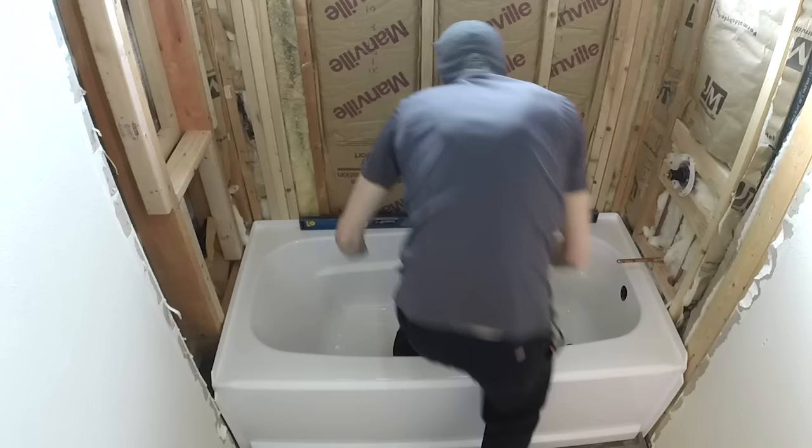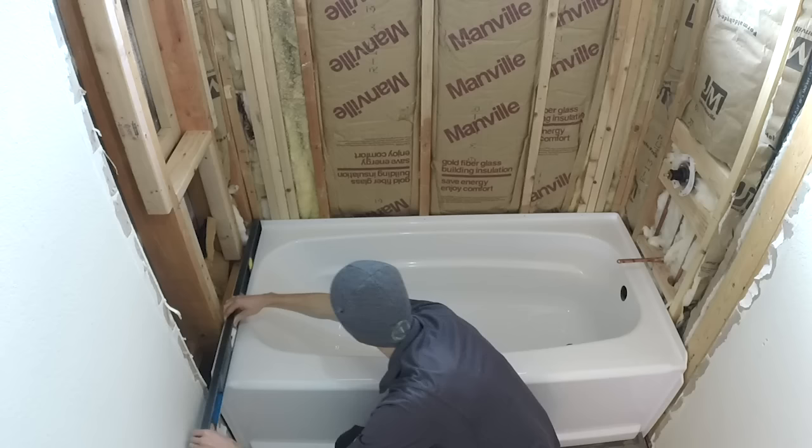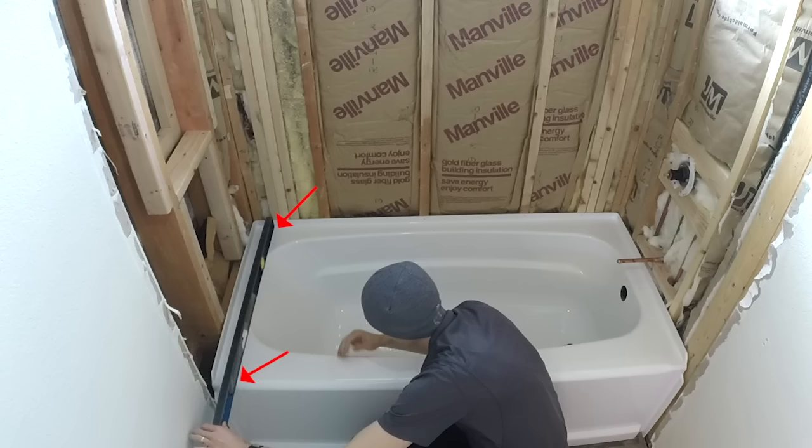You don't want your tub sloping in either direction. However, just pay attention to the top of the tub because it's not completely flat, you know, which is necessary for drainage. So make sure when you put your level on that you put it on both edges of the tub as you see here.